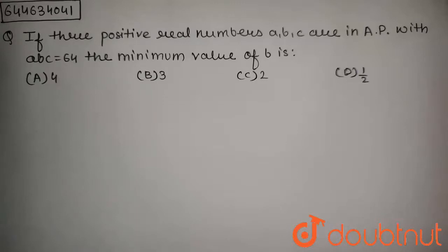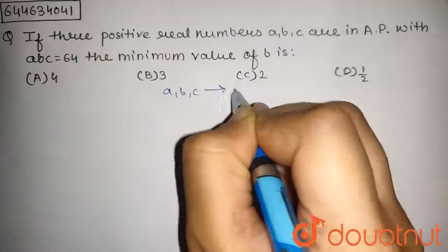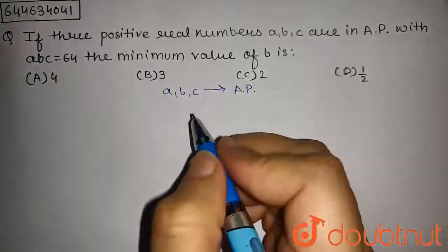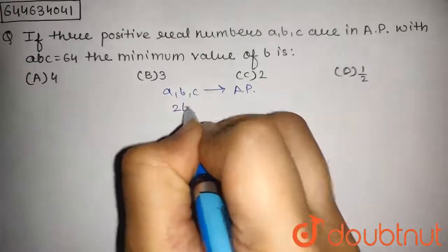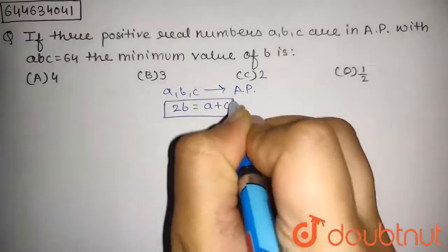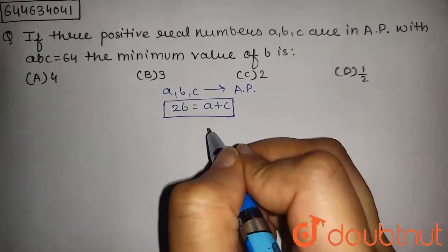In this question we have given that A, B, C belongs to an AP. If A, B, C belongs to AP, we can write 2B equals A plus C. So now we have to find the minimum value of B.